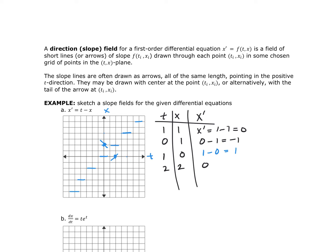Choosing some other points: at (2, 1), the slope is 1. At (3, 1), the slope is also 1—so wherever T is 1 greater than X, I get a slope of 1. Similarly, at (1, 2), the X value is 1 larger than T, giving a slope of negative 1. I draw slopes of negative 1 along that entire diagonal line.